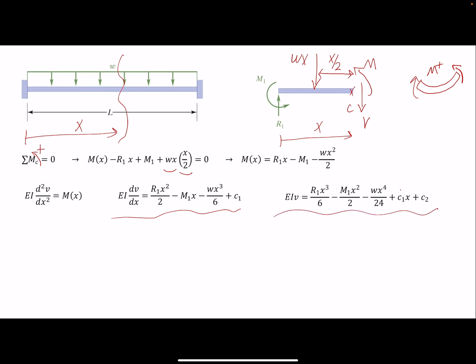We have C1 as an unknown, we have C2 as an unknown, and also we don't know the value for M1 and R1. We are trying to find that, so we have four unknowns here. But we have four boundary conditions that we can solve these unknowns for.